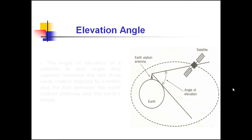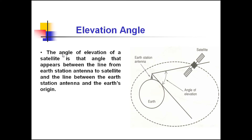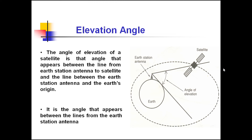Elevation angle is the angle of elevation of a satellite — the angle between the line from the Earth station antenna to the satellite and the line between the Earth station antenna and the Earth's surface. Draw an imaginary line between the antenna and the surface of the Earth, then join the antenna and the satellite to form another line. The angle made between these two lines is called the angle of elevation.